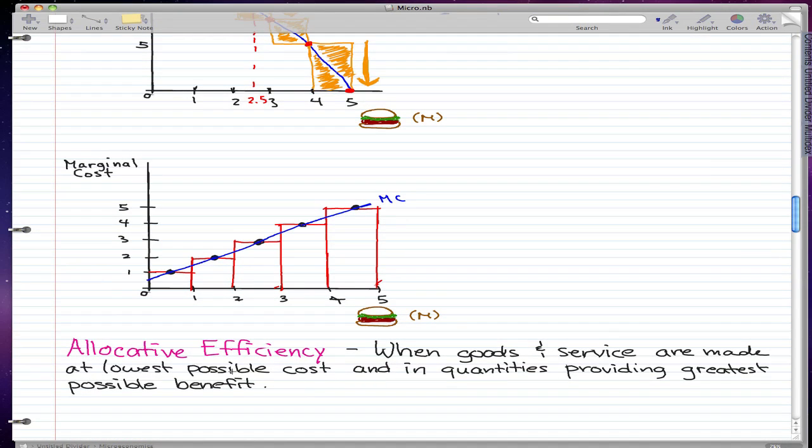Lastly, I just want you to know that the definition of allocative efficiency is when goods and services are made at the lowest possible cost and in quantities providing the greatest possible benefit.